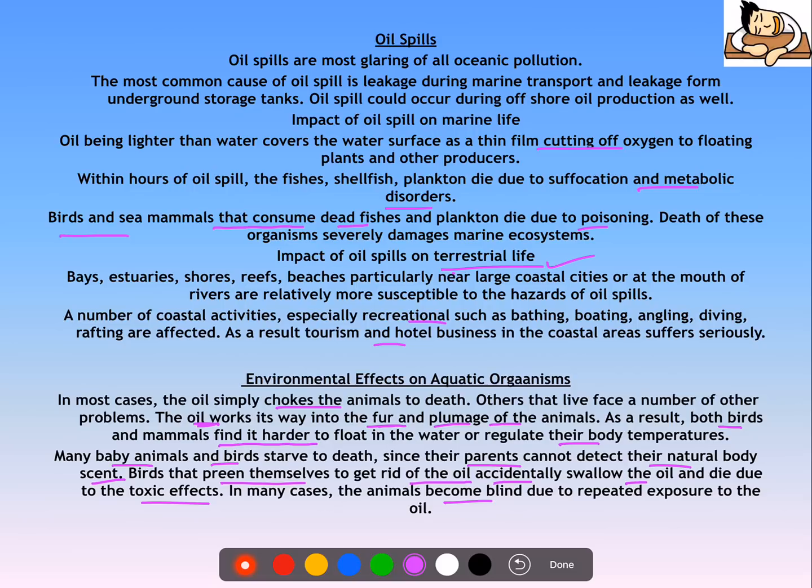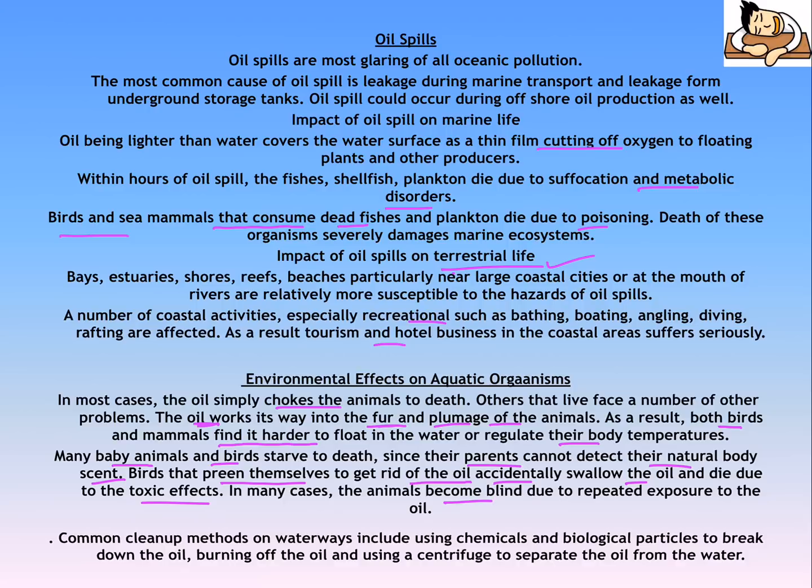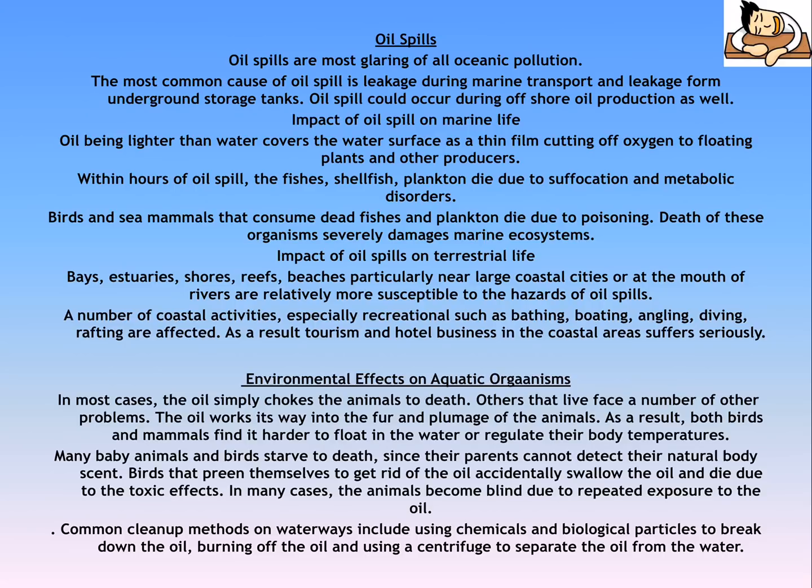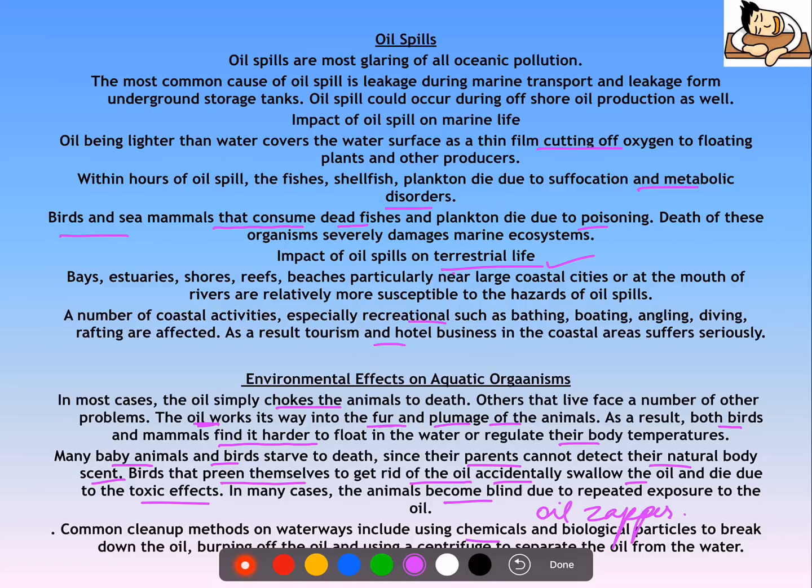A great deal of damage is caused to aquatic organisms and terrestrial life, making the entire ecosystem unstable. The clean-up methods mostly involve bioremediation, using microorganisms and chemicals. One example is the oil zapper bacteria — microorganisms used to clean up oil spills.